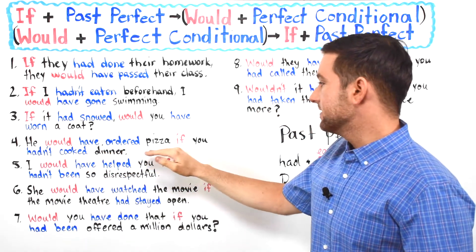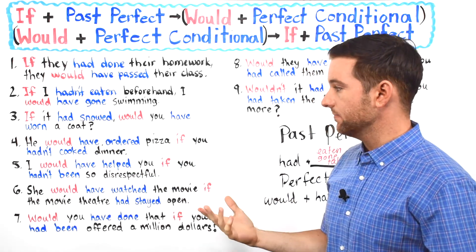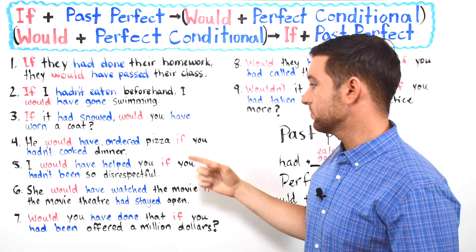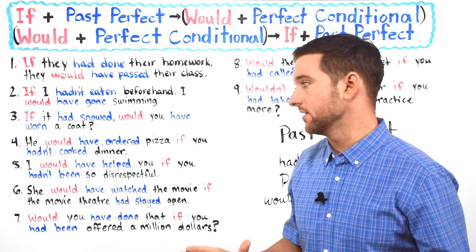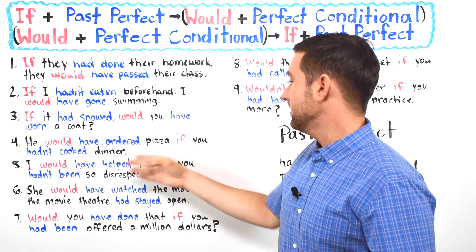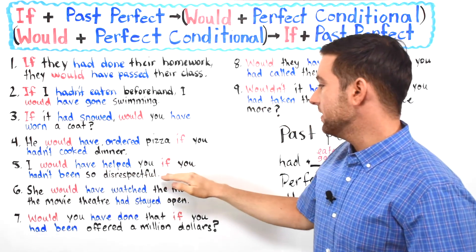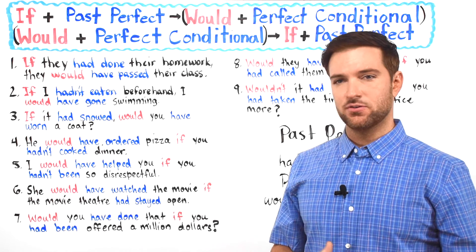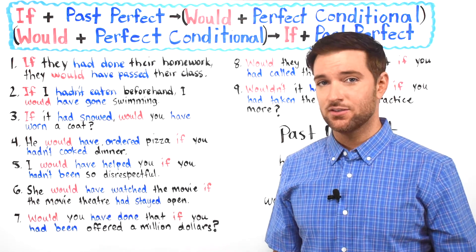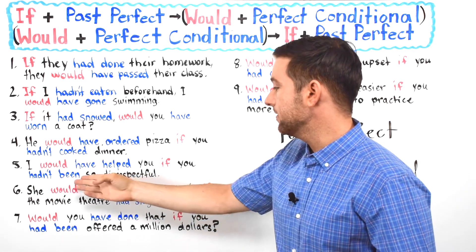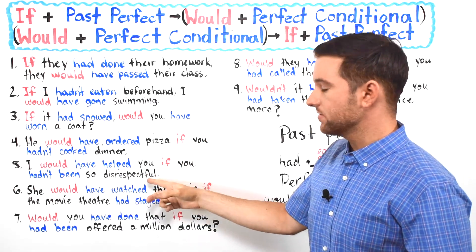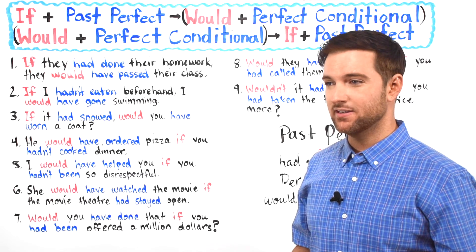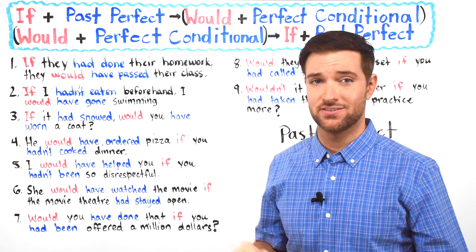Number four: 'He would have ordered pizza if you hadn't cooked dinner.' Somebody in this case had cooked dinner, and maybe somebody else was thinking they really wanted pizza tonight. But this person had already cooked dinner, so he's not going to order pizza anymore. Number five: 'I would have helped you if you hadn't been so disrespectful.' Disrespectful means bad manners — you're rude, not kind, you don't say please and thank you. One person could have offered help, but decided not to because they didn't like that person's behavior.